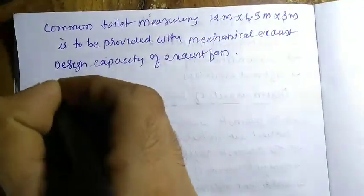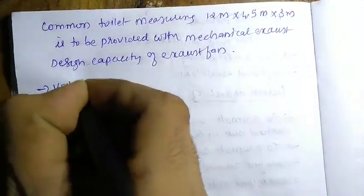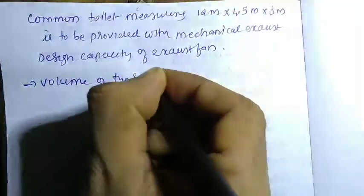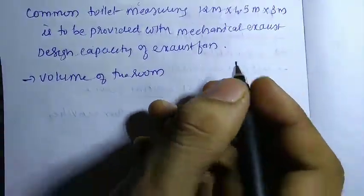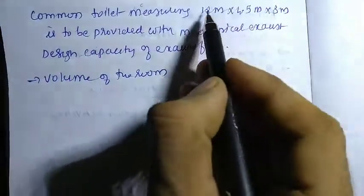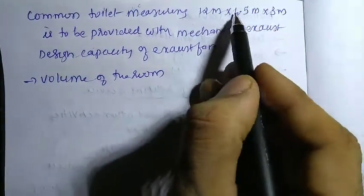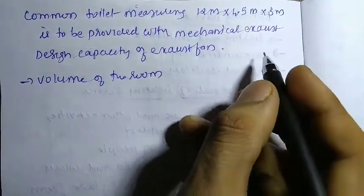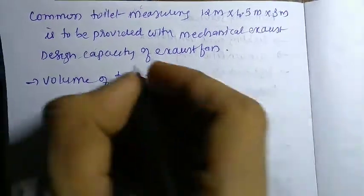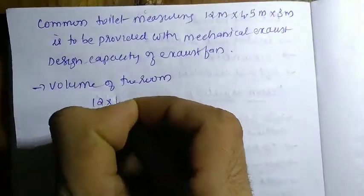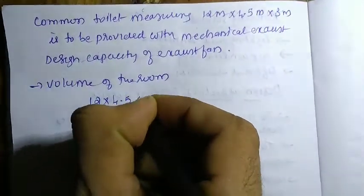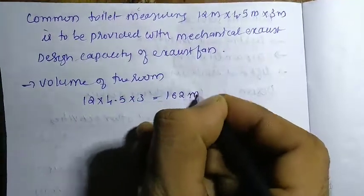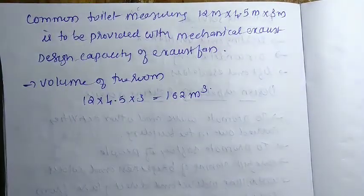First, calculate the volume of the room. Volume equals length × breadth × height. The volume of the room is 20 × 4.5 × 3 m, which gives a volume of 162 m³.